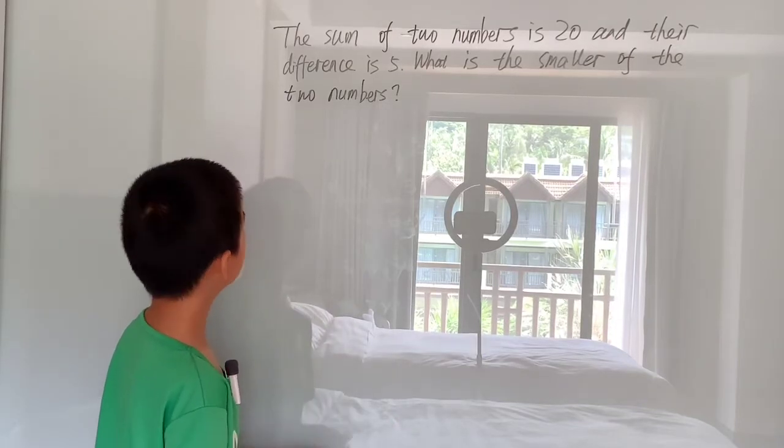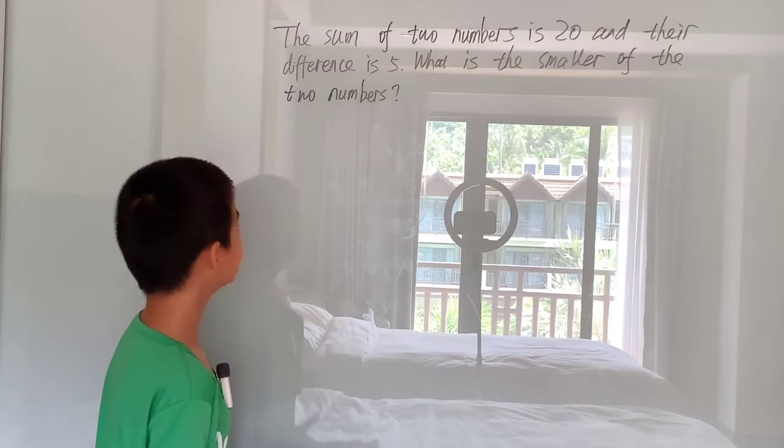The sum of two numbers is 20 and their difference is 5. What is the smaller of the two numbers?